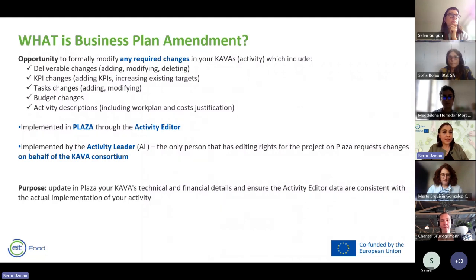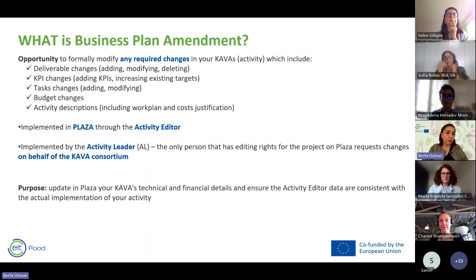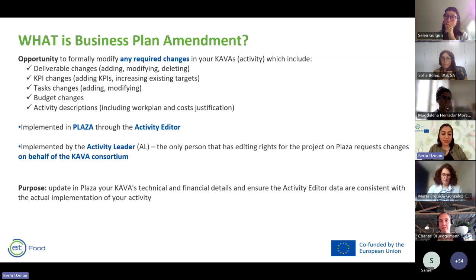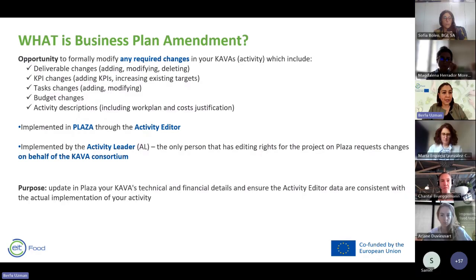What is the amendment we are talking about? This is the opportunity to formally modify any required changes in your KAVA. These required changes may include a deliverable change — either adding, modifying, or deleting — a KPI change such as adding a KPI or increasing existing targets, task modifications, or budget changes, which is likely the most critical one.